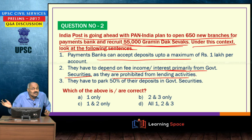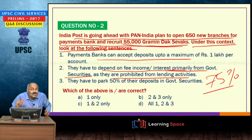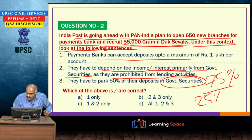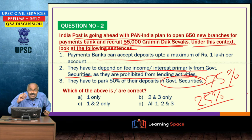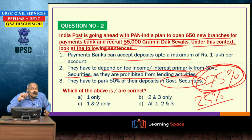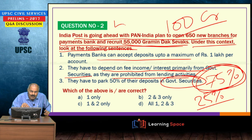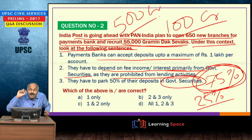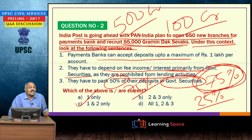Payments banks cannot issue credit cards but can issue debit cards; they cannot lend. Seventy-five percent of the money must be deposited in government securities, and 25 percent can be kept with other banks in fixed deposits or current account deposits. The minimum capital prescribed for payments banks is rupees 100 crore; for universal banks it is 500 crore. Payments banks and small finance banks are examples of differentiated banks. Statements 1 and 2 are correct; the third must be corrected to state 75 percent must be invested in government securities.